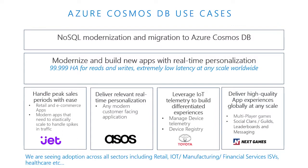That sounds like a real benefit to these customers and truly allows them to focus on innovation versus data management. Exactly. And that brings me to the second scenario with Azure Cosmos DB. Customers are also modernizing and innovating on existing applications, or looking to build new modern applications. They're using Azure Cosmos DB to ensure their app can handle spikes in traffic and can deliver personalization in real time, leveraging IoT telemetry to build differentiated experiences for their customers, and finally ensure a high-performing application anywhere in the world.